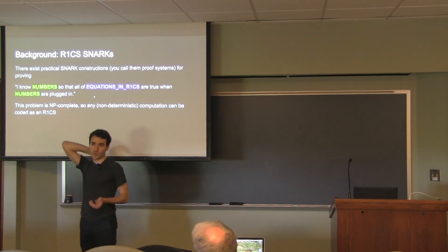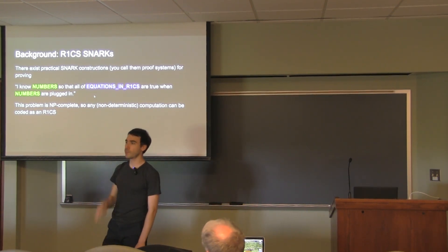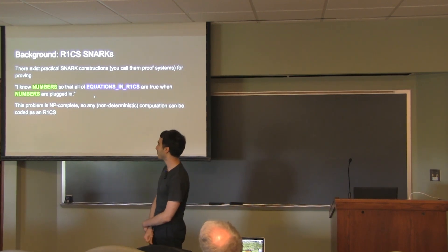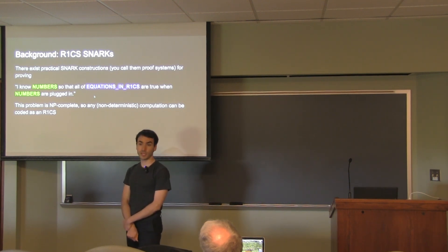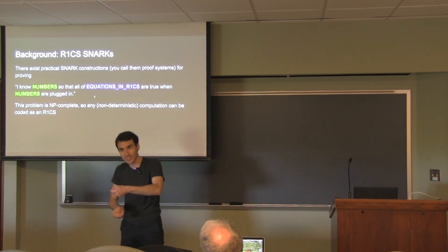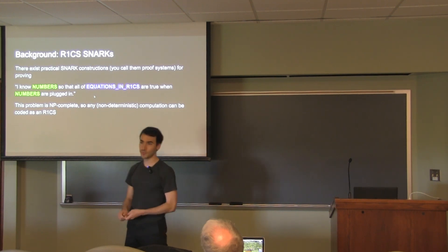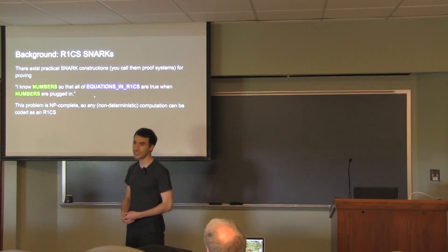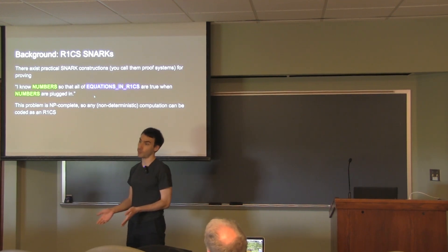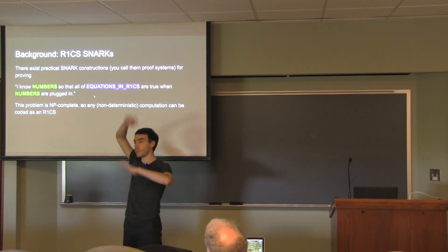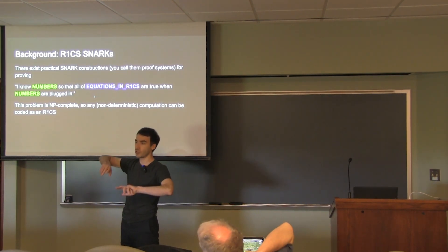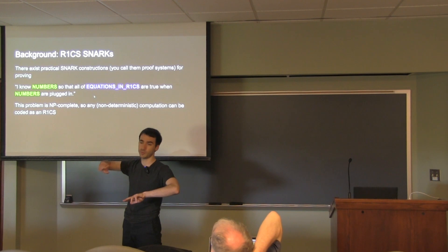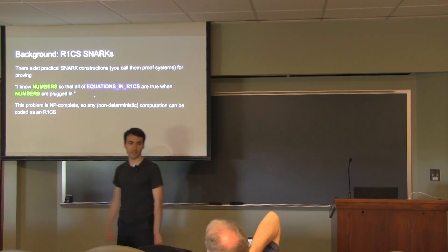Is there a method to compile to constraint systems? Well, that's kind of what this talk will be about. In some sense there is a method — you can simulate AND and negation with multiplication and addition, and anything can be compiled into a bunch of NANDs. But that's really crappy because it generates enormous constraint systems — it's never going to be practical. These SNARK constructions are practical but still slow, so you'll be dead before the naive encoding works.